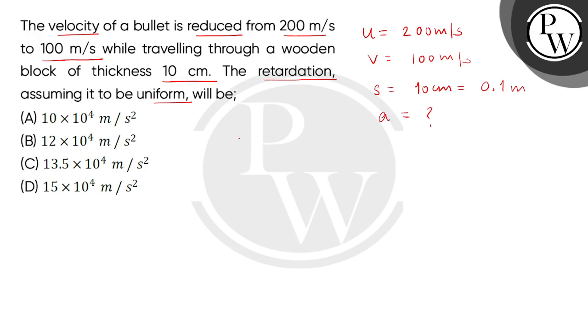We will use the third kinematical equation, which is v² - u² = 2as. So this is 100² - 200² = 2 × a × 0.1.